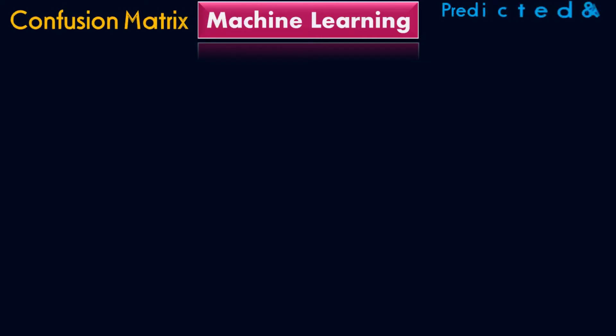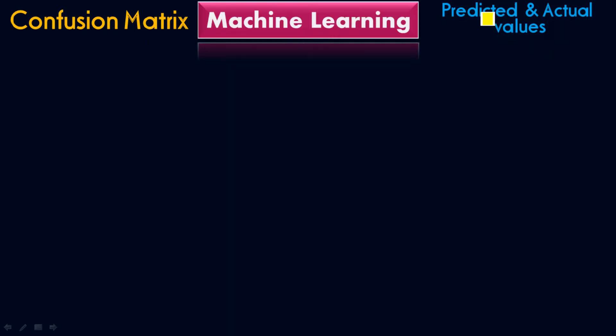In this session, I'm going to talk about the confusion matrix. What is actually a confusion matrix, and why do we need it? It carries predicted and actual values. The name itself suggests it creates a picture of how much accuracy the model has, what is the precision value of the model. All these predicted and actual values can be achieved with the help of the confusion matrix.